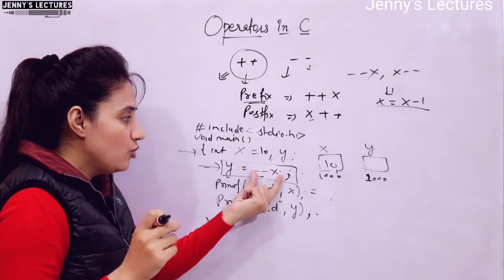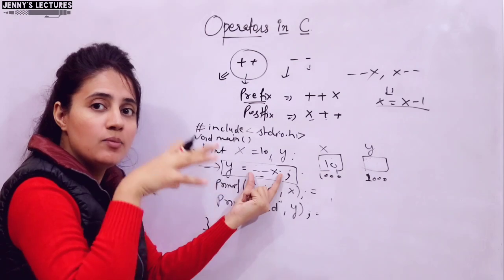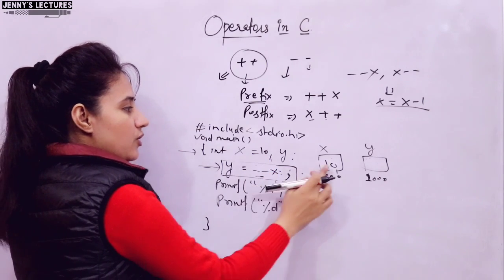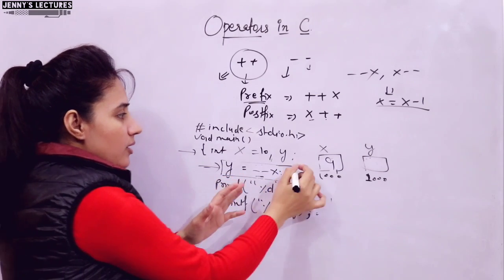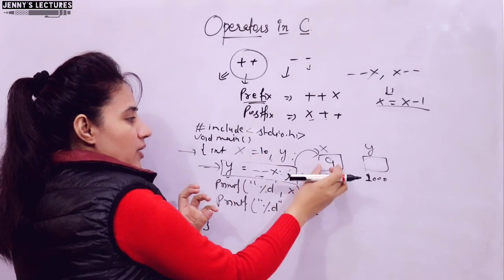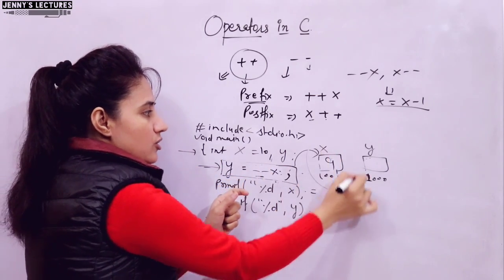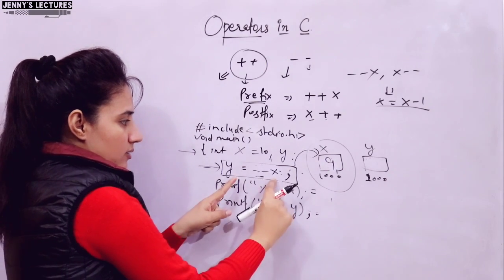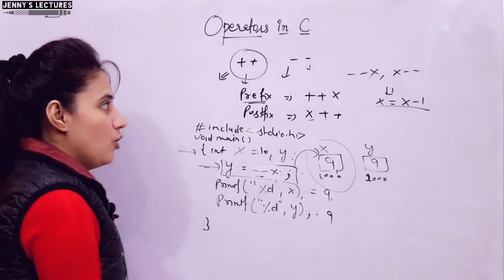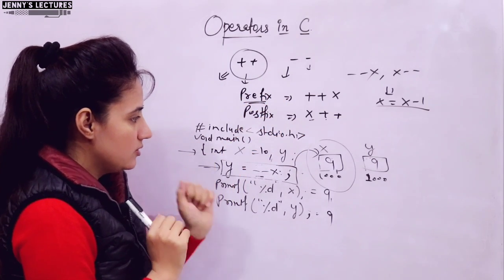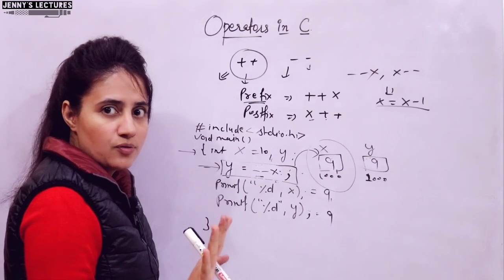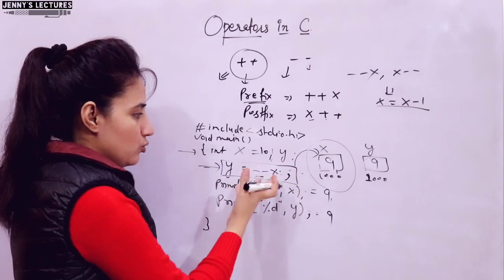In pre-decrement, the value of the operand is modified first — decremented — and then the updated value is used in the expression. So for --x where x = 10, the value becomes 9 first. Values are modified in memory because memory was assigned to the variable. So 9 is assigned to y, and output is 9 and 9. Note: increment and decrement operators can be used with both integer and float values.